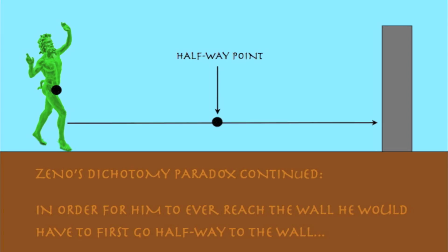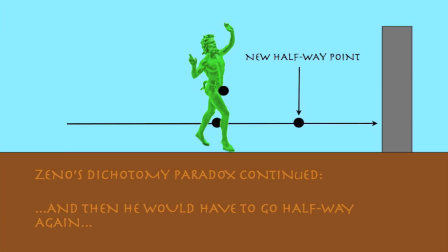In order for him to ever reach the wall, he would have to first go halfway to the wall. And then he would have to go halfway again.